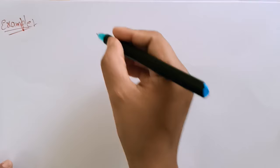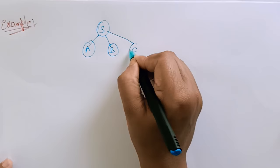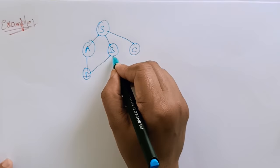So here I'm taking one graph. S is a node and its successors are A, B, and C. D is here, and B is connected to D as well as to G. So this is the graph I have taken.